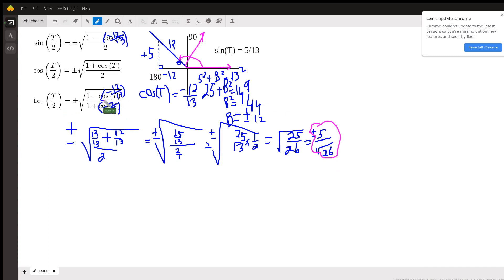Now, to do the tangent, I need to do the same kind of work. So this was the sine of theta over 2. Okay. And now if I want to do the tangent, I have to do a very similar thing. So this is going to be plus or minus. We have some more of these complicated fractions. I'm going to start by making 1 here, 13 over 13. And that's going to be minus a negative, so it becomes plus 12 over 13. So that's the top.